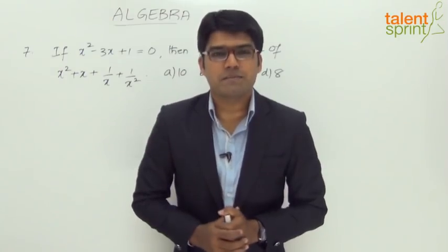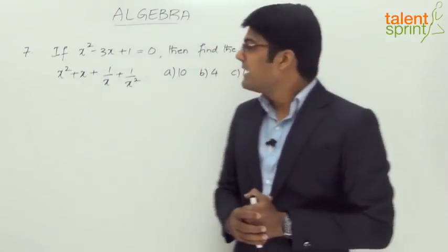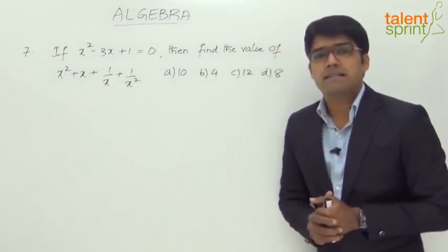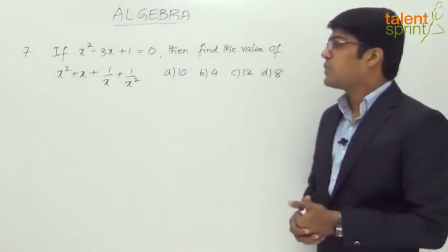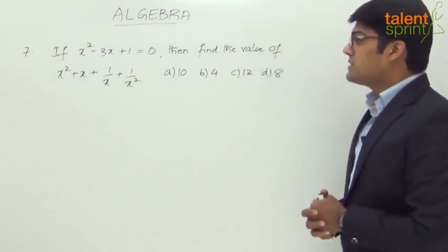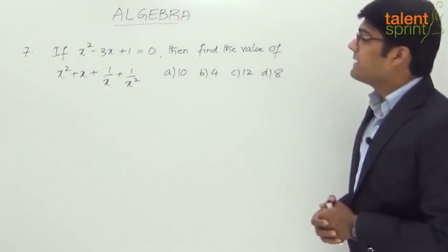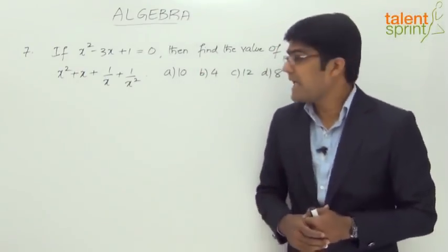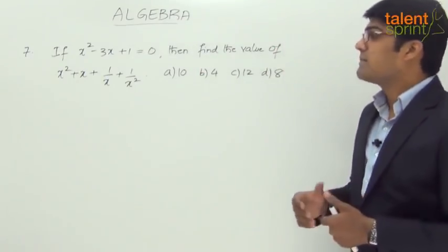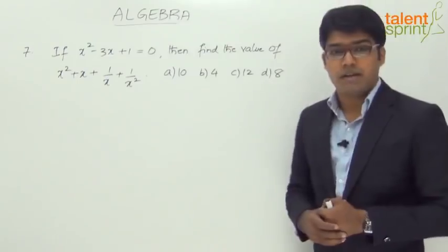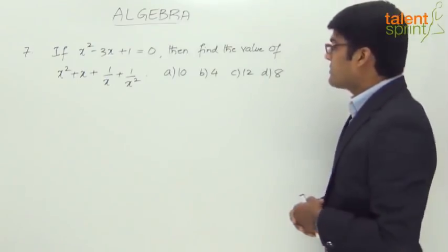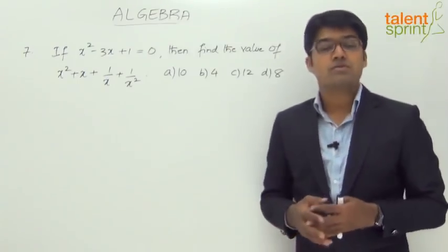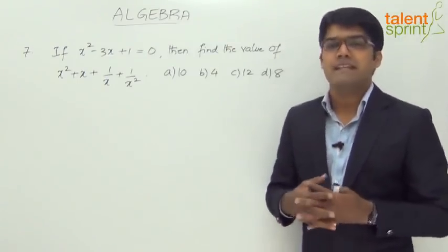Let us now take question number 7. It says: if x squared minus 3x plus 1 equals 0, then find the value of x squared plus x plus 1 by x plus 1 by x squared. The answer options are 10, 4, 12, and 8.